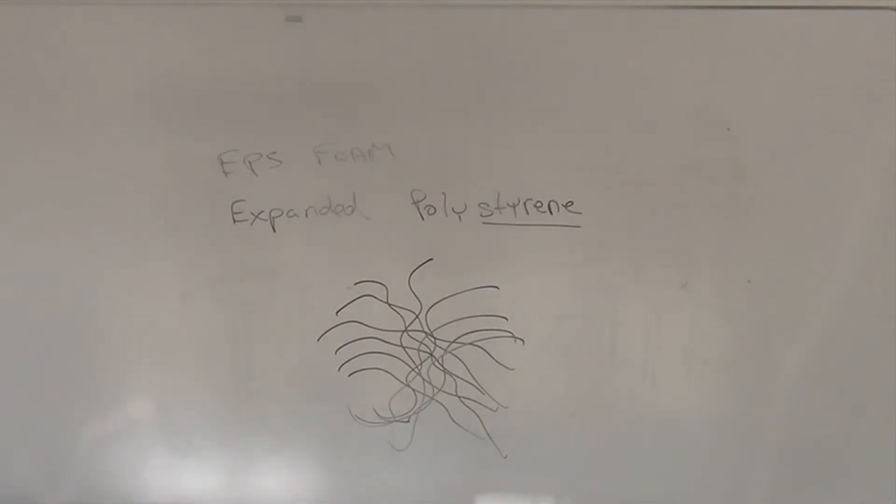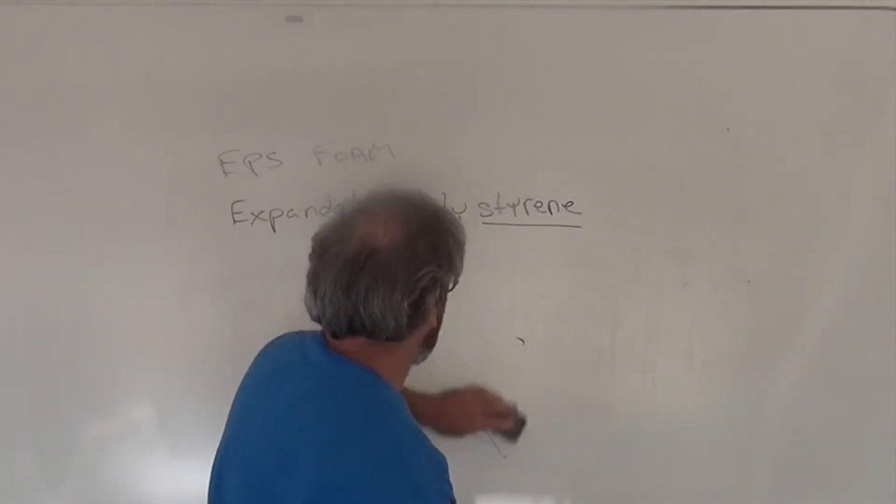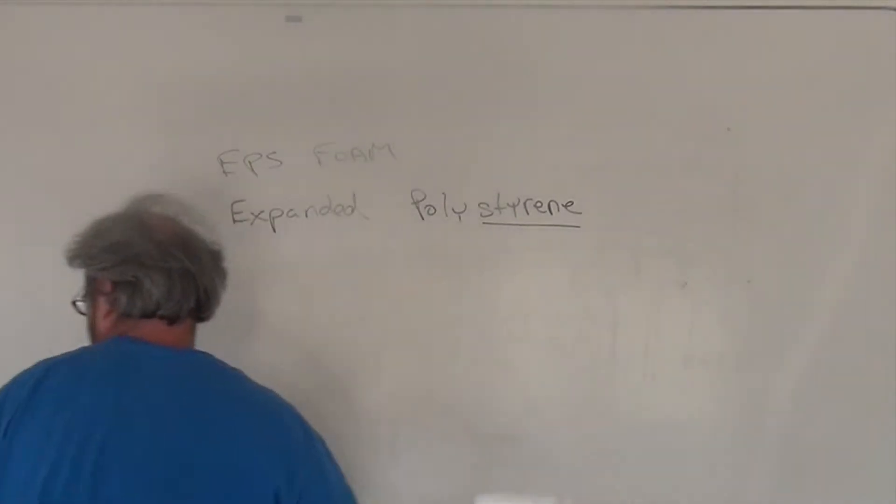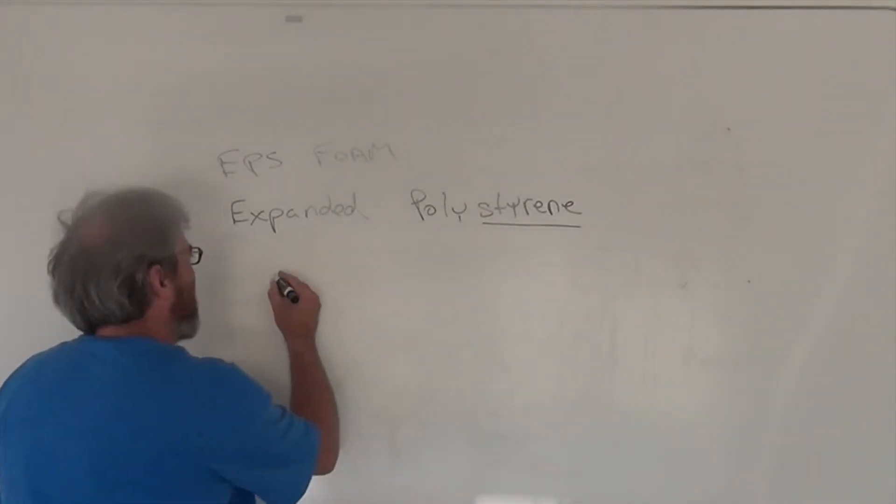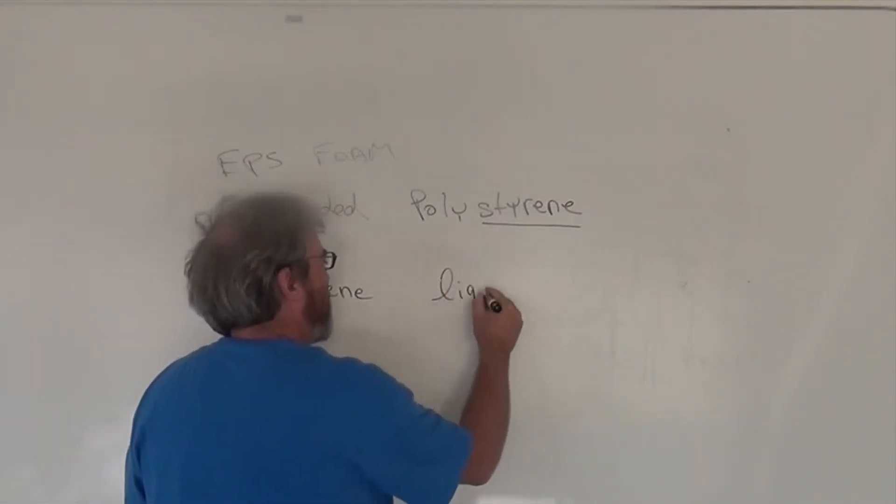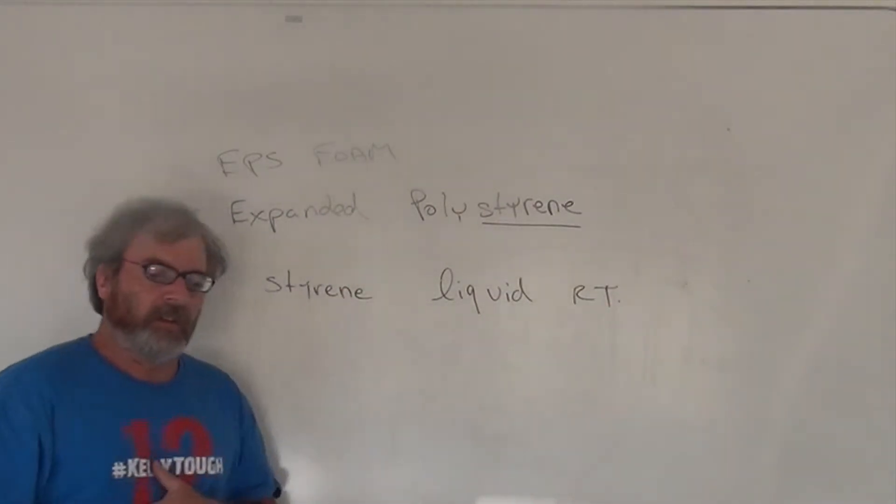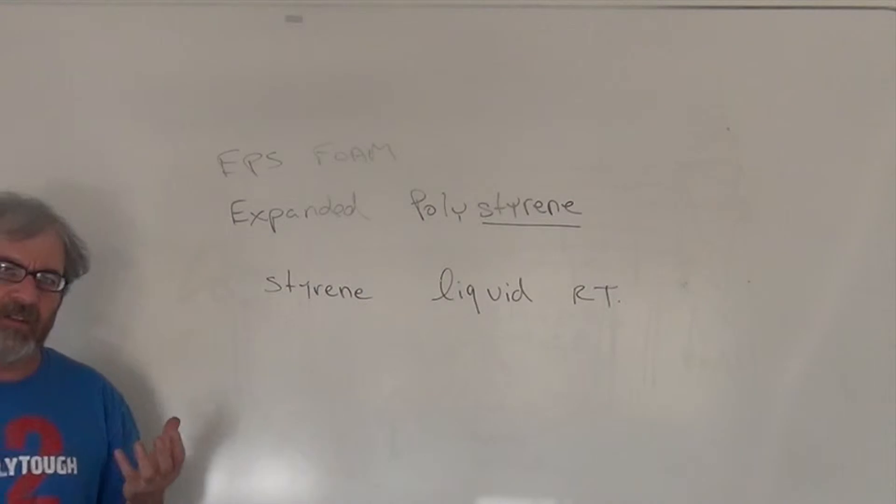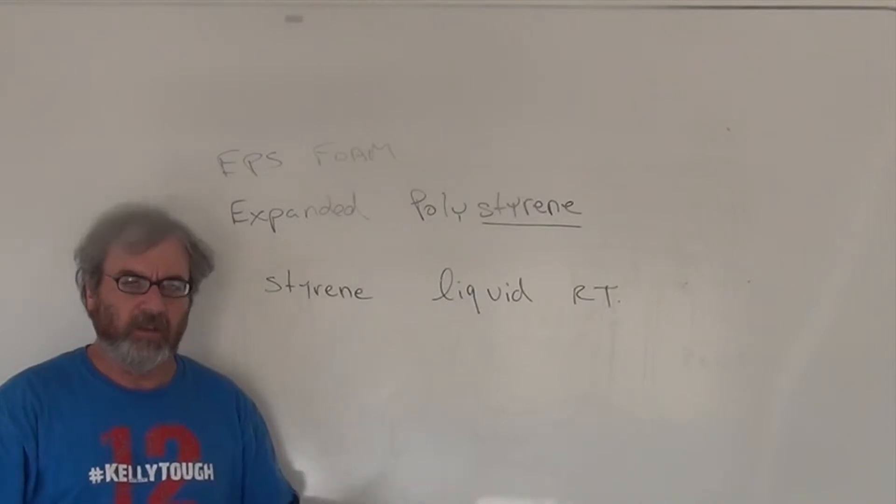Let's talk about how the expanded polystyrene is made. So we go back to the styrene monomer. And styrene is a liquid at room temperature. And it's oil-like. It doesn't like to dissolve in water. So it's like salad dressing, you know, a water part and an oil part.